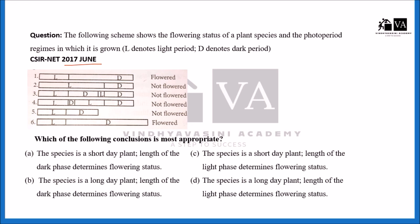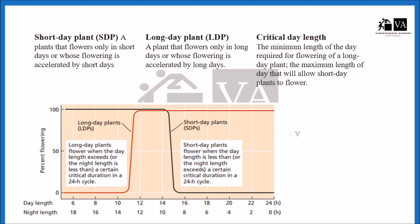To solve these questions, first we need to understand what is long day plant and what is short day plant. Plants need a certain duration of light for flowering. Based on this, plants are categorized into three groups: first is short day plant, second is long day plant, and third is day neutral plant.